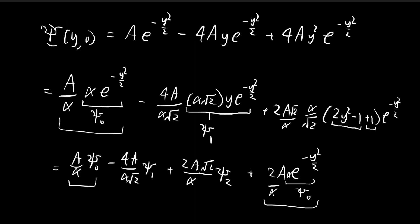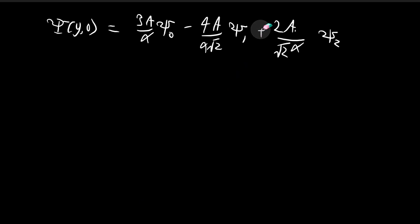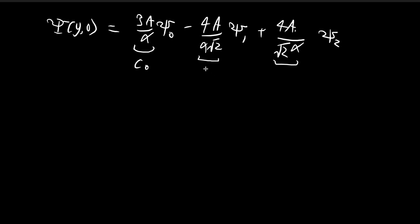The second term is −4a/(α√2) · ψ₁, and the third term is 2a√2/α · ψ₂. Multiplying numerator and denominator of the last term by √2 shows that both the ψ₁ and ψ₂ coefficients have the same magnitude. We have now identified c₀ = 3a/α, c₁ = −4a/(α√2), and c₂ = 4a/(α√2), but we still need to determine the constant a.